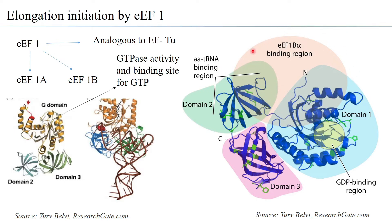This region of domain 2 is also a binding region for the second elongation factor, EF1B alpha. There are three sub-forms of EF1B, and the most preferable one that binds to EF1A is EF1B alpha. EF1A has three domains that can bind to three different components, and domain 2 and domain 3 together help in interacting with the aminoacyl tRNA.